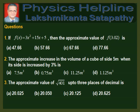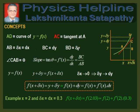Before proceeding to solve the problems, let us recall the related concepts. Let us understand what kind of approximation comes into play when we find the value of a quantity using the method of differentiation. Consider a function y = f(x) as shown in the figure where the graph of the function is AD. At point A on the graph, the coordinates are x, y such that y = f(x). At D, the coordinates are x plus delta x and y plus delta y such that y plus delta y equals f(x plus delta x). When we move from A to D, x increases by AB = delta x. When delta x is very small, we put delta x equal to dx.